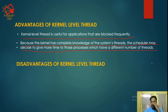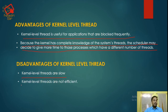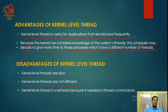What are the disadvantages of kernel-level threads? Kernel-level threads are slow, as they are more complicated than user-level threads. Kernel-level threads are not efficient. They also have overhead because they need thread control, making them much more difficult and complicated.